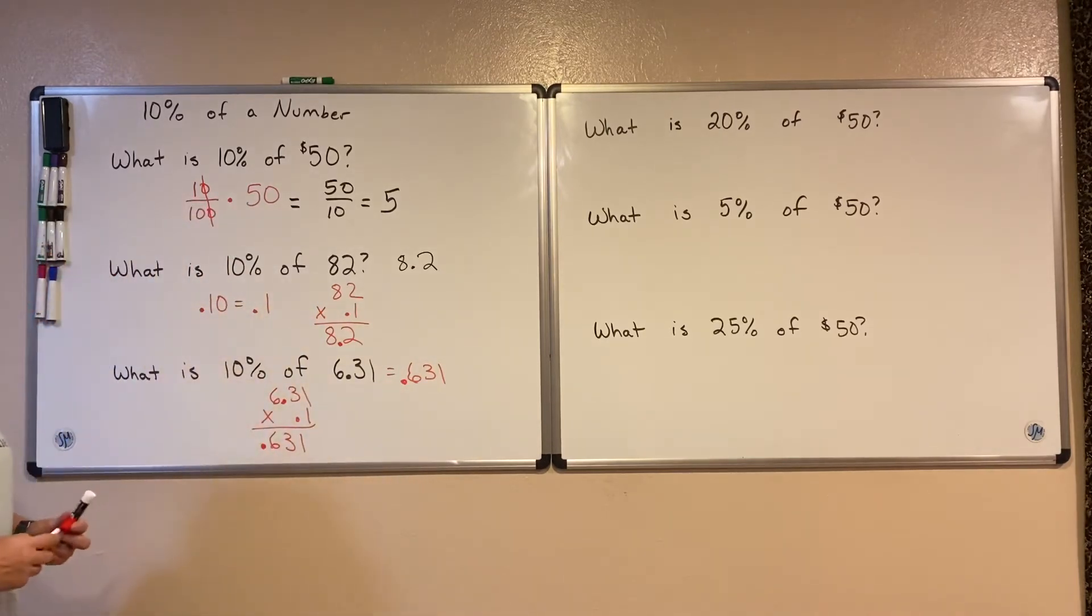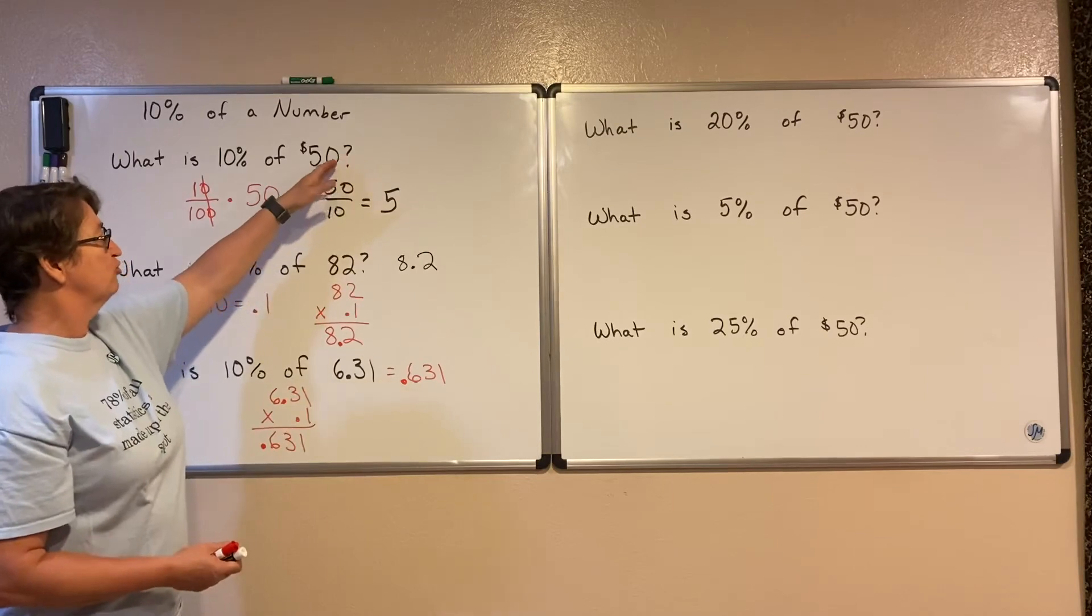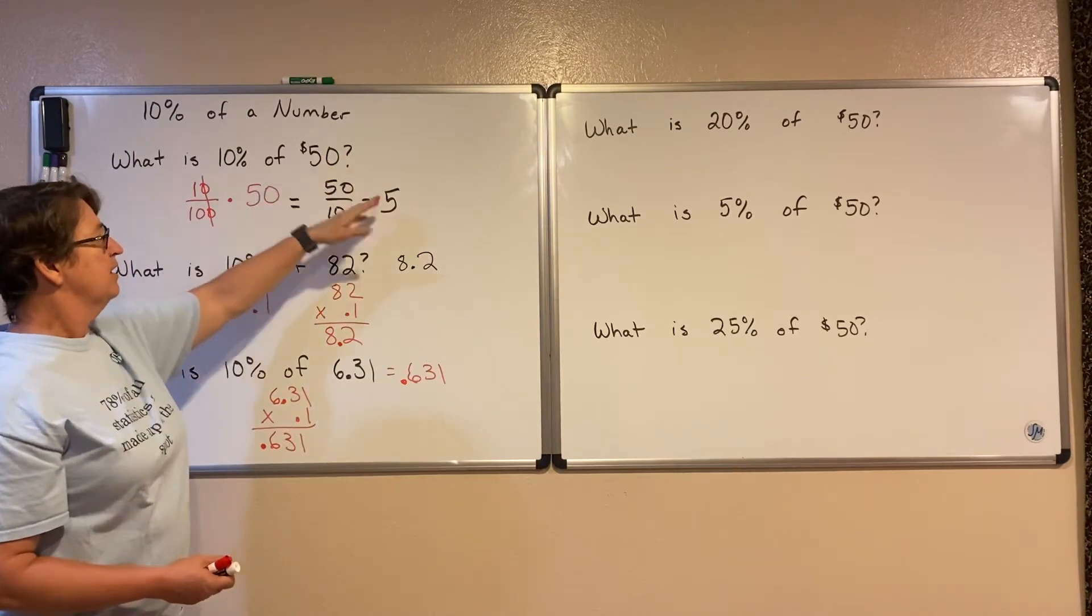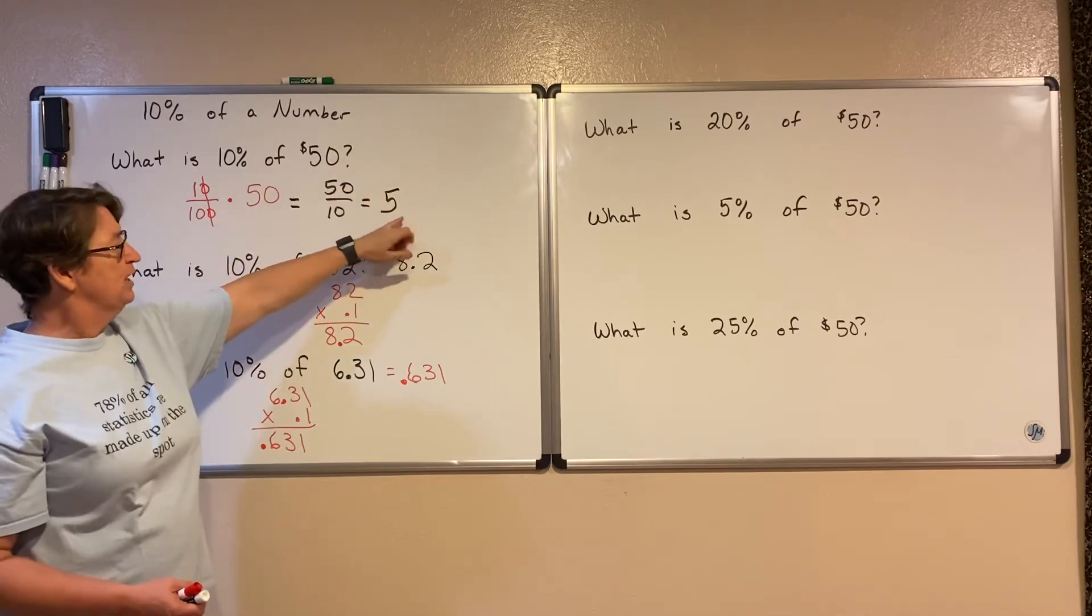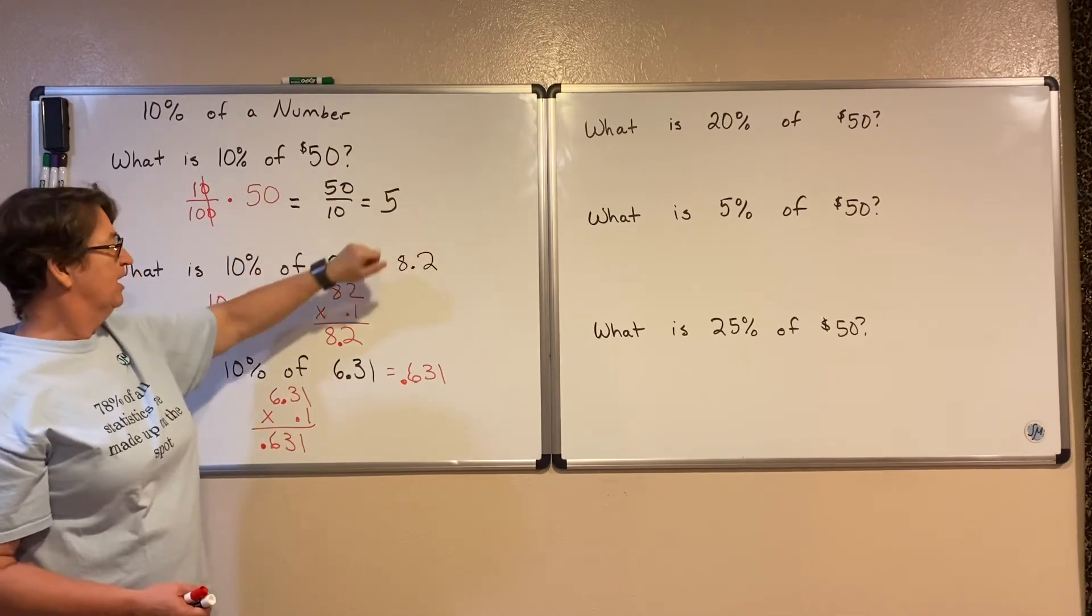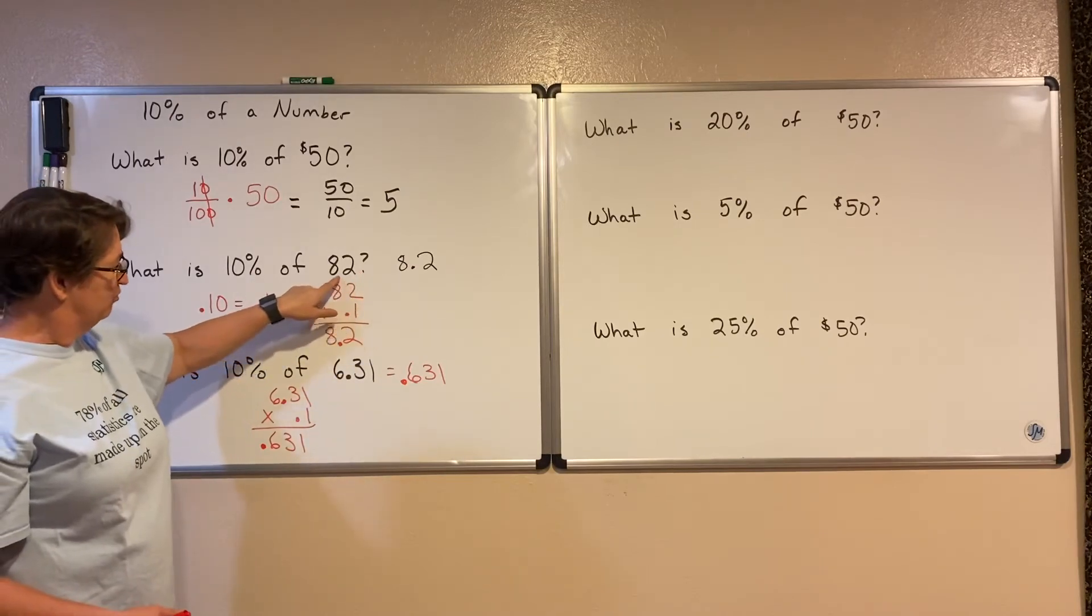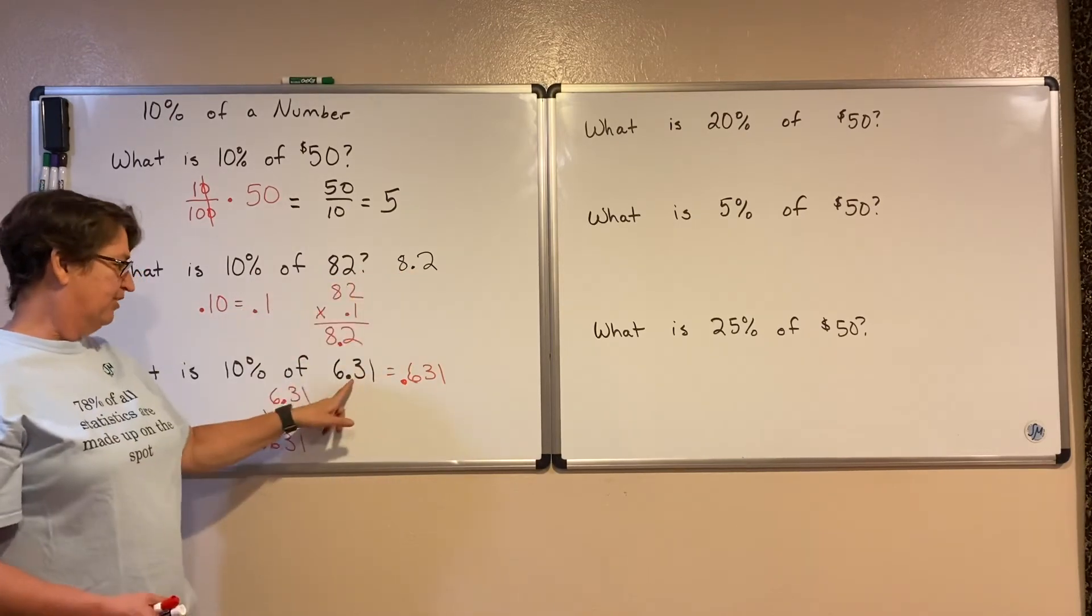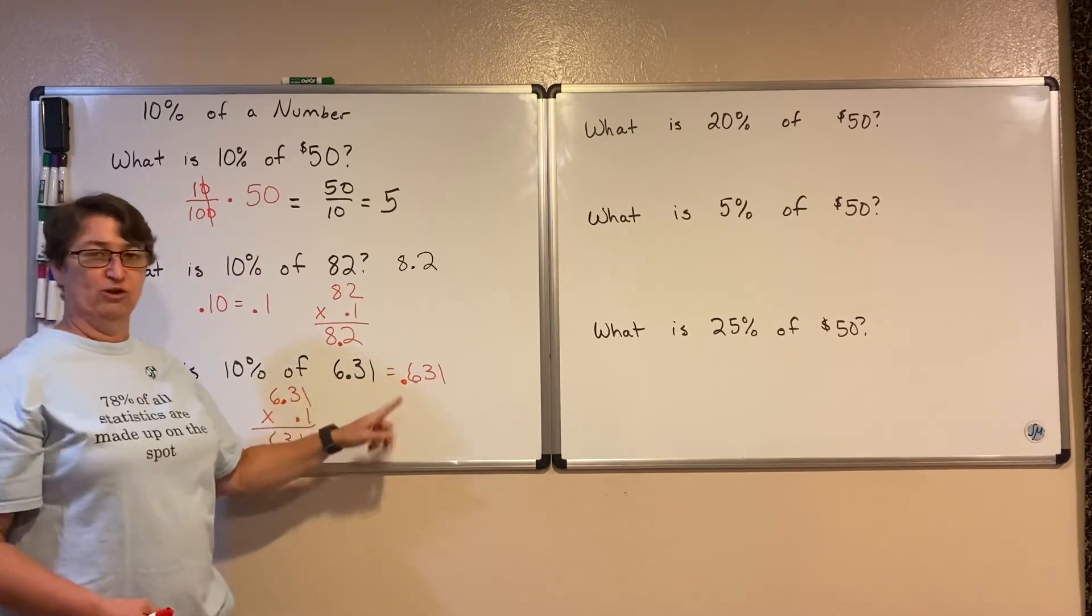Notice that in each one of these, what has happened is our decimal has just moved over to the left one spot. So our decimal started behind the 0, and in our answer, it's just moved over one spot. Our decimal started behind the 2, and our decimal just moved over one spot. Our decimal started behind the 6, and it moved over to the left one spot.